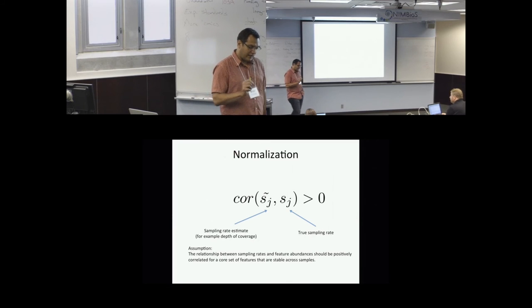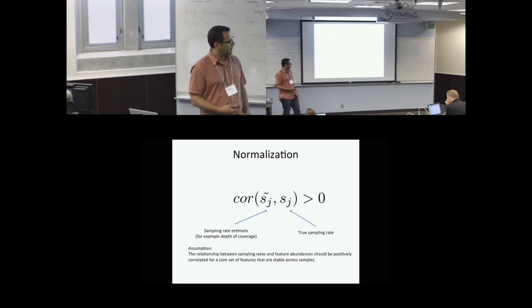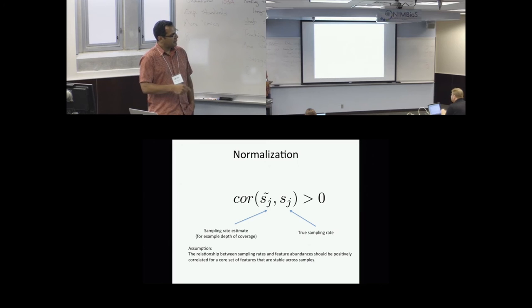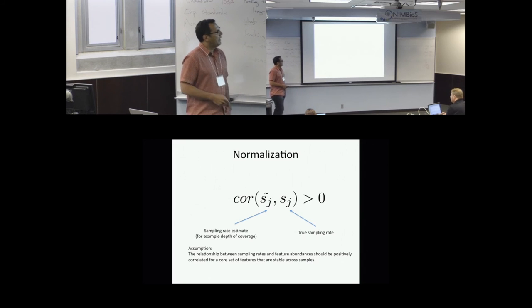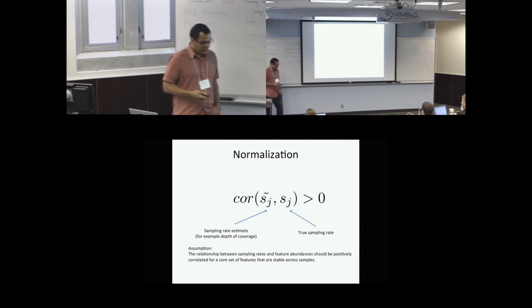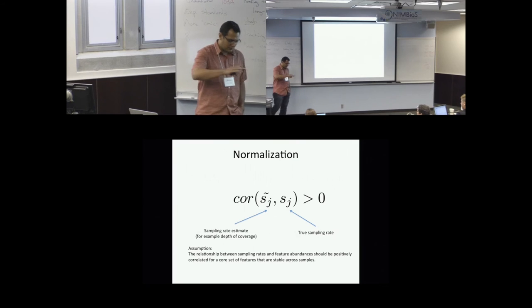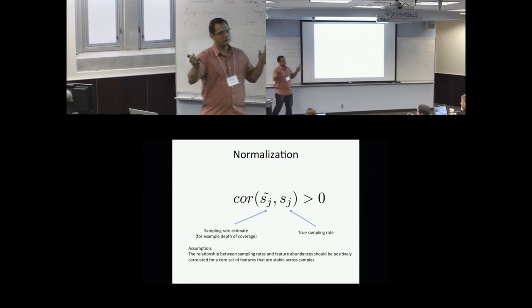So we wanted to ask this question. All of what we're doing is estimating sampling rates for each sample. How good are different estimates of sampling rate, including the total number of reads that you obtain for a given sample? This is an unknown actual sampling rate. How good are you at capturing reads from a given community and sequencing them? And these are estimates of that sampling rate. And we wanted to ask this question. Suppose that there are a number of features that don't change too much in these datasets. What we'd expect to see is, the bigger the sampling rate across samples, the number of reads that you observe across samples for a given feature should also increase.